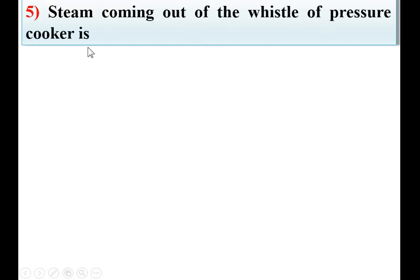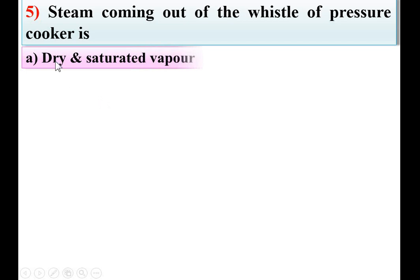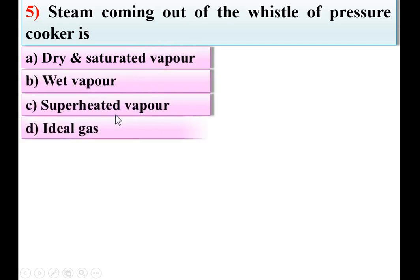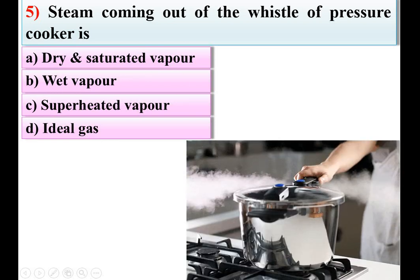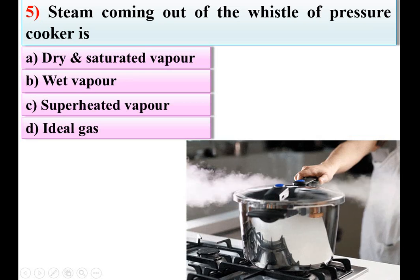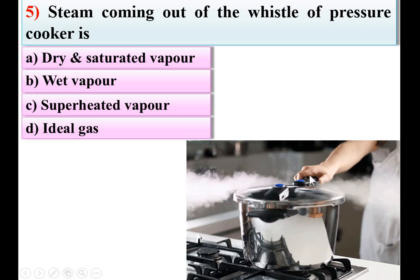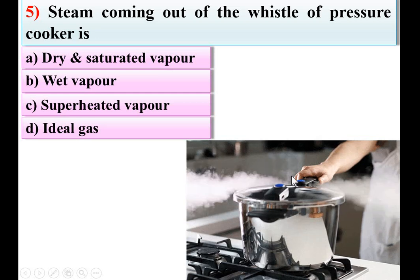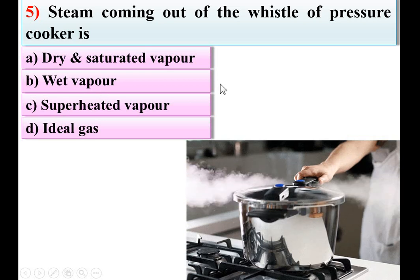Next: steam coming out of the vessel of a pressure cooker is option dry and saturated vapor, wet vapor, superheated vapor, or ideal gas. Consider the figure of a pressure cooker. When steam comes out from the vessel, you might observe that some water particles are gathered around the vessel, meaning there are water particles present. So it is called wet vapor. B is the right answer.